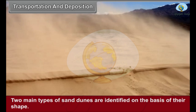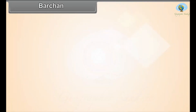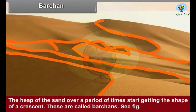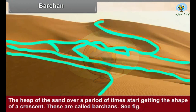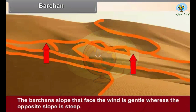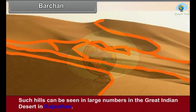Two main types of sand dunes are identified on the basis of their shape. Barchans: Due to an obstacle in the path of the wind or due to lowering of its velocity, sand moving with it gets dropped at some places. The heap of sand over time starts getting the shape of a crescent — these are called barchans. The barchan slope that faces the wind is gentle whereas the opposite slope is steep. Such hills can be seen in large numbers in the Great Indian Desert in Rajasthan.